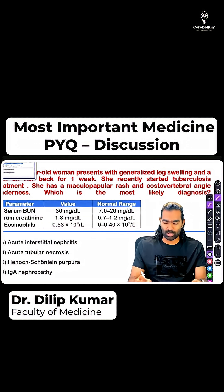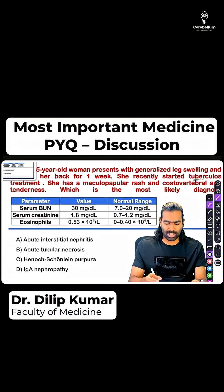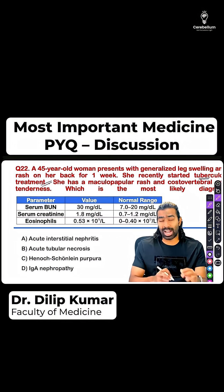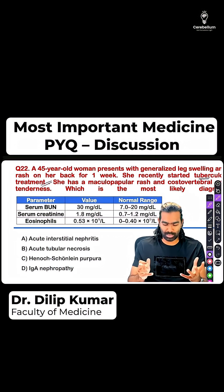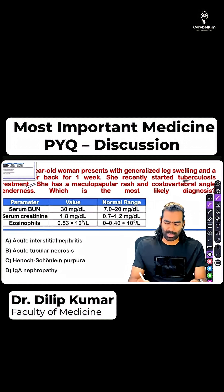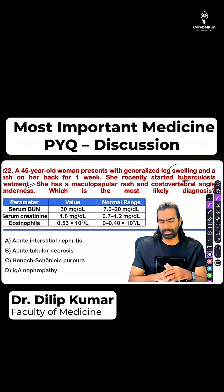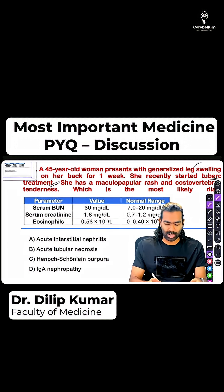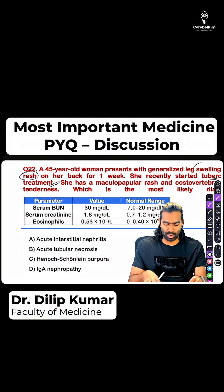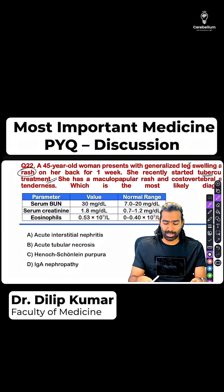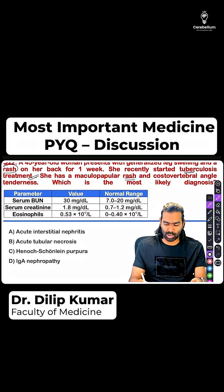So what has happened here? The patient has been diagnosed with tuberculosis and started anti-tubercular therapy. There is a history of some drug exposure in the last one week, and the patient is now coming with generalized leg swelling and a rash on the back for almost a week. On examination, she has a maculopapular rash and there is costovertebral angle tenderness.